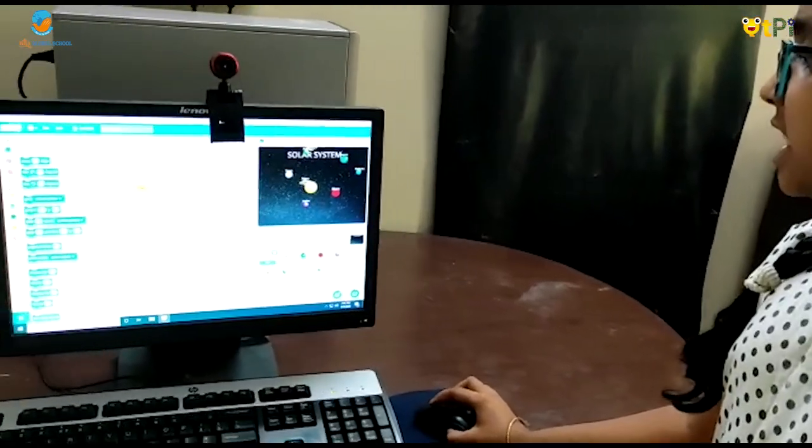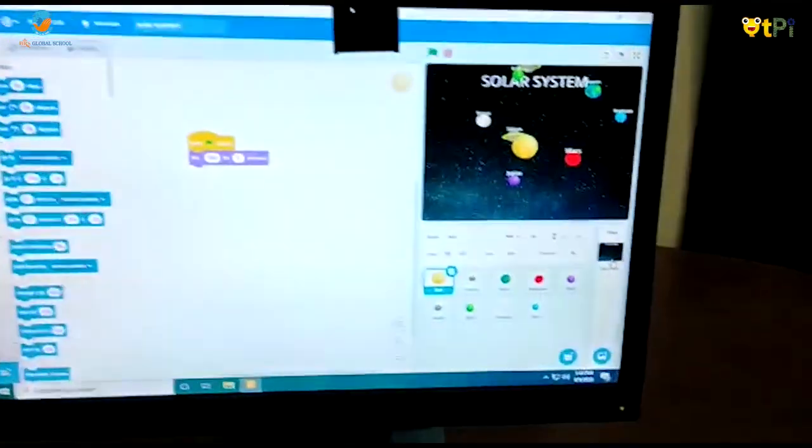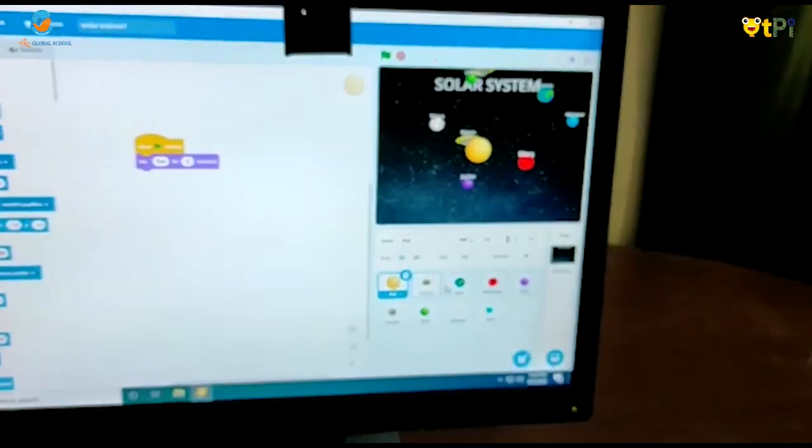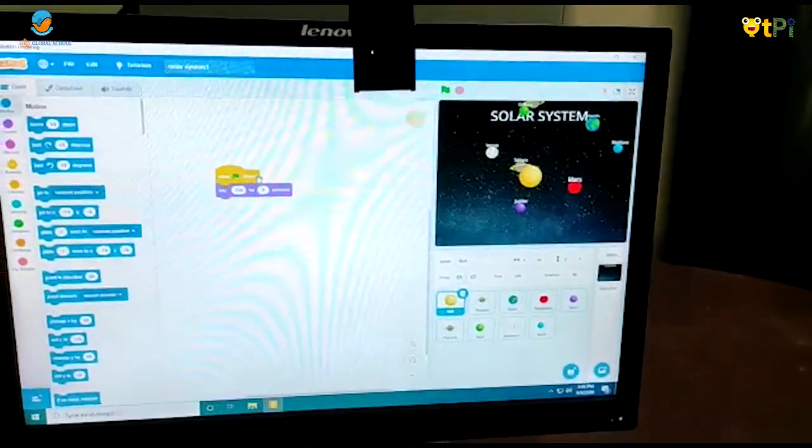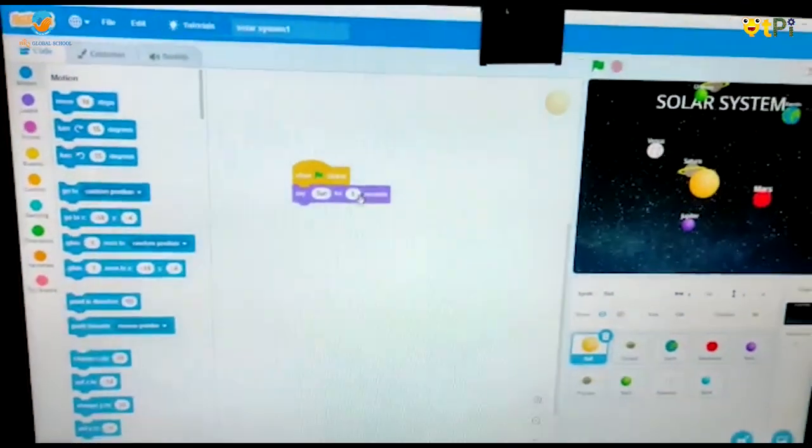I added stars backdrop as sky and nine bright-sized planets. For sun, when flag clicked, say sun for 5 seconds.